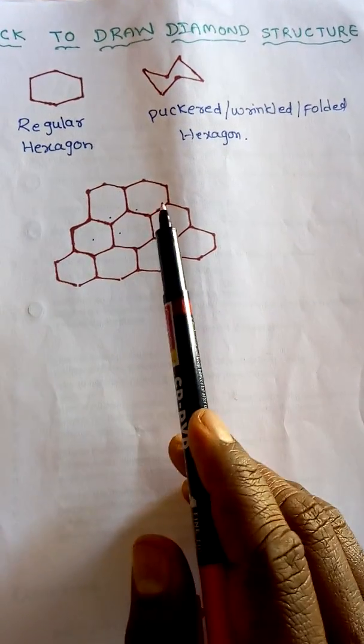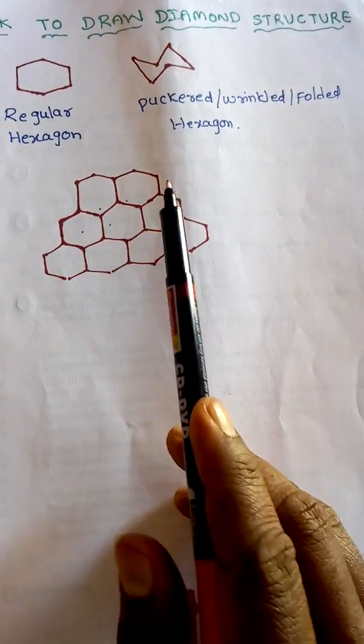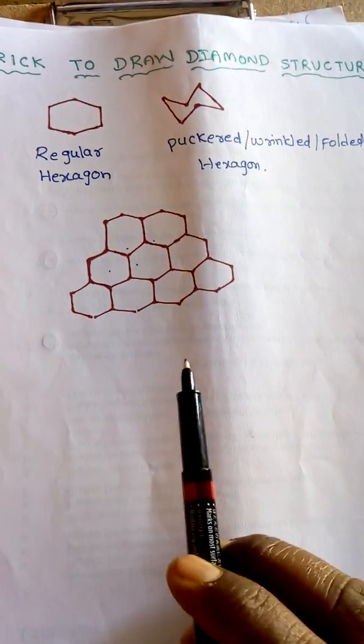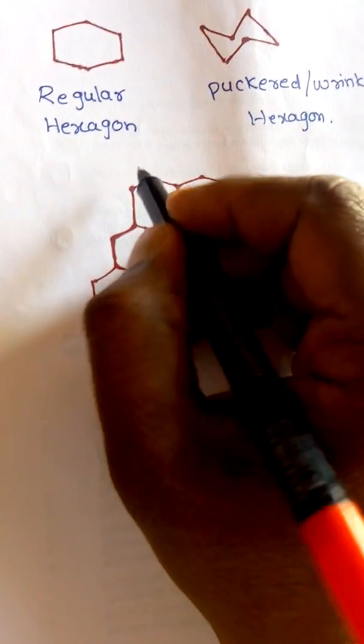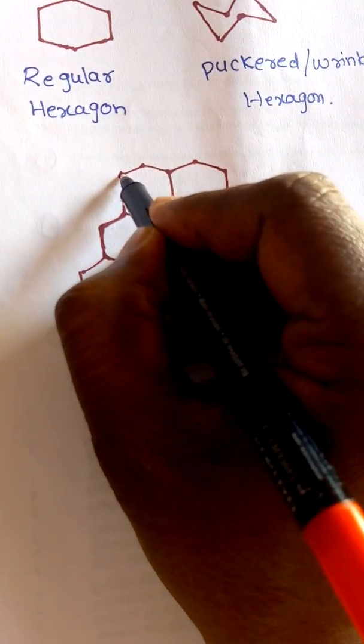First of all, we have to make a sheet with the regular hexagon. Then after, we have to specify the alternate carbons in order to understand the structure easily like this.